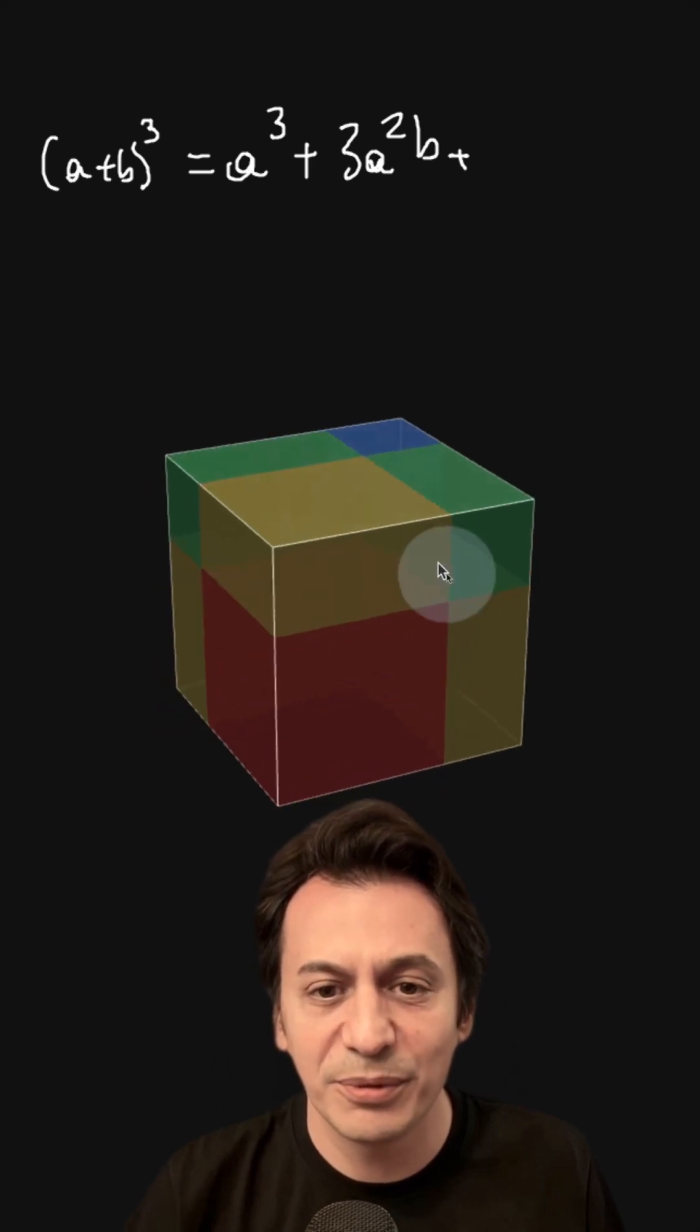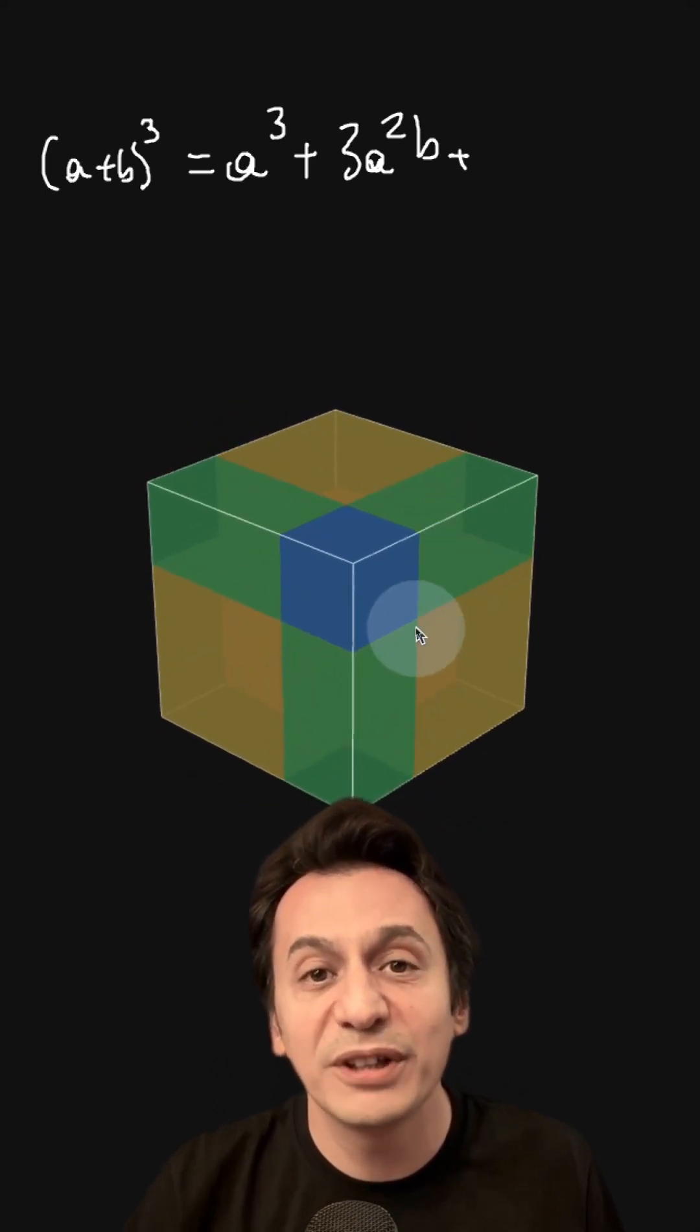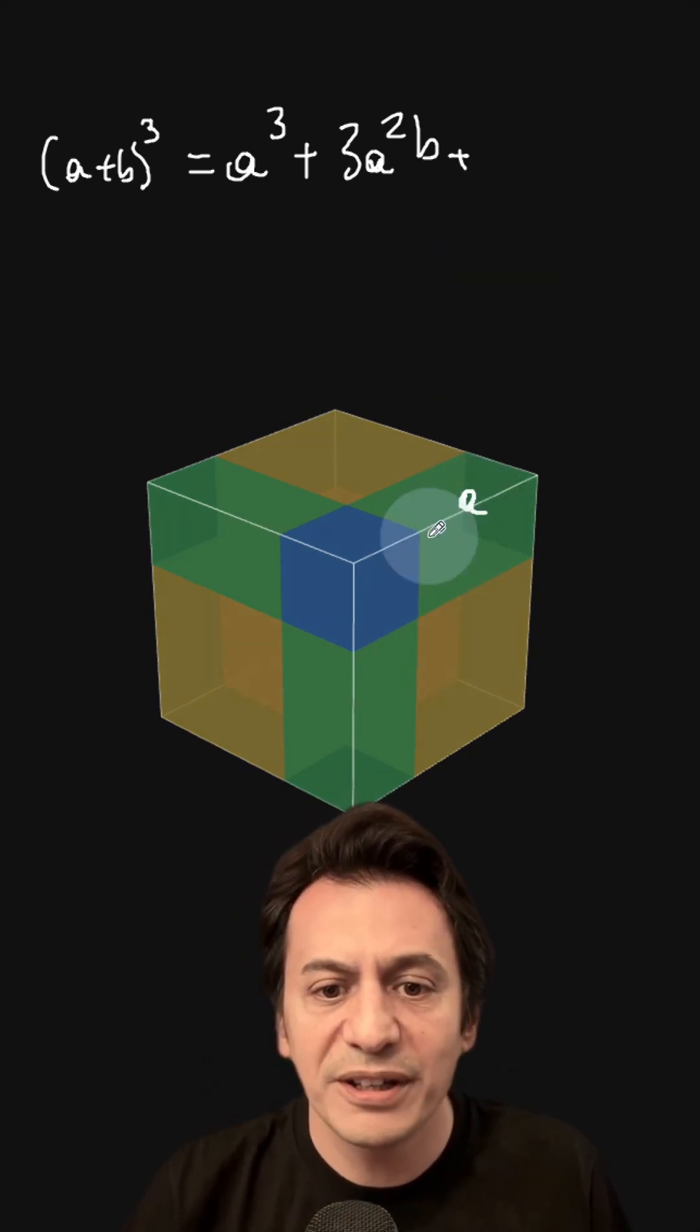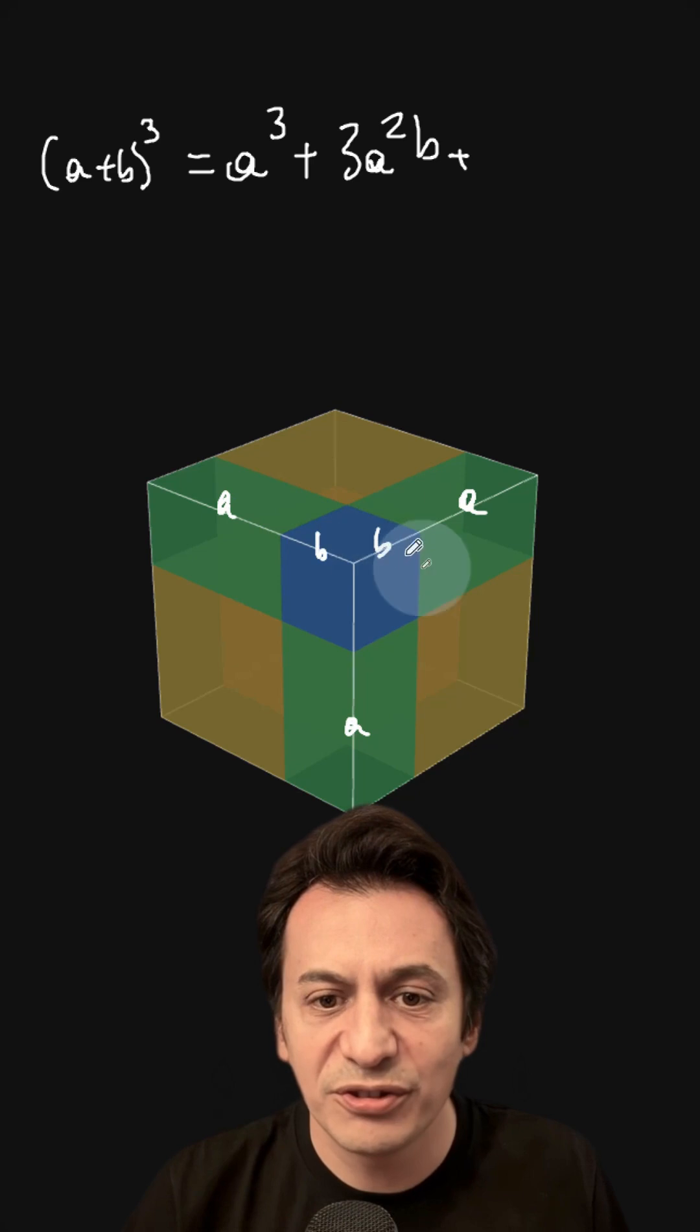Now we've calculated this part. We'll calculate the volume of these green and blue sections on the back face. We called the long piece A and the short piece B, so let's write them here.